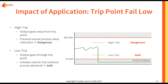What about trip point fail low? If you have a high trip, the output goes away from the trip point. It is preventing measurement of the actual process value, and it is not tripping your plant, so it is a dangerous failure. However, if you have a low trip, your output is going through the trip point, initiating a trip without a hazard from the system. You are tripping the plant — it is a safe failure.